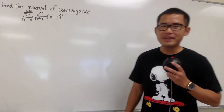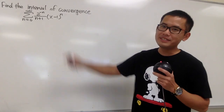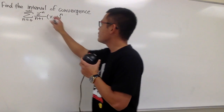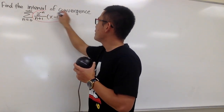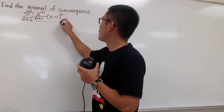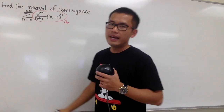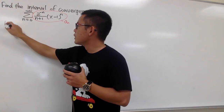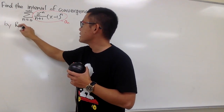I'm going to show you guys how to find the interval of convergence of this power series by using the ratio test. So let's go ahead and indicate that this right here is our a_n. We will be doing this by the ratio test.